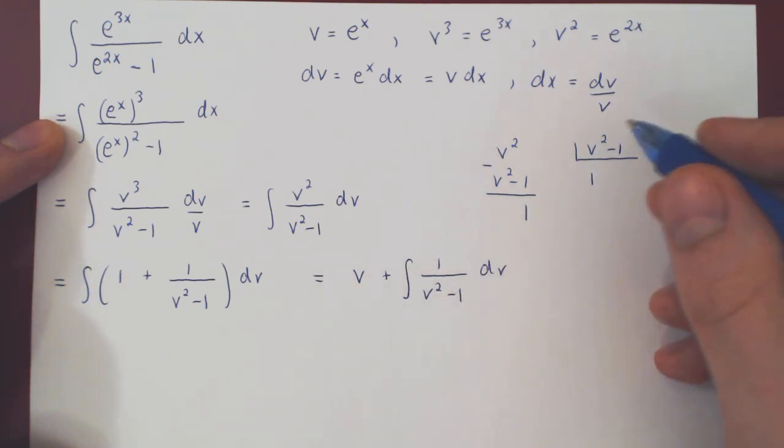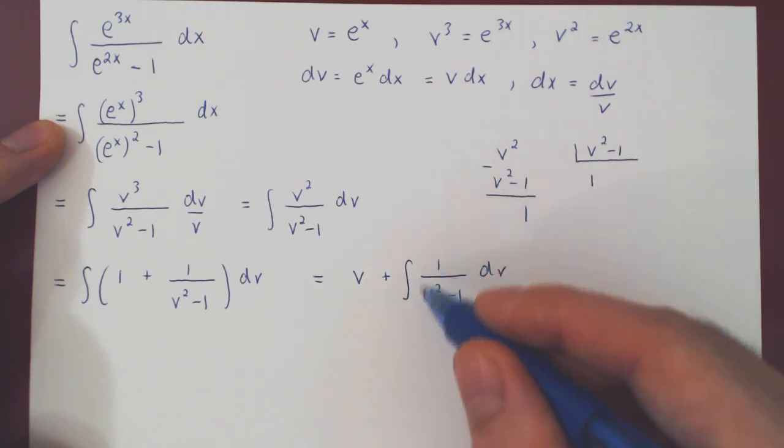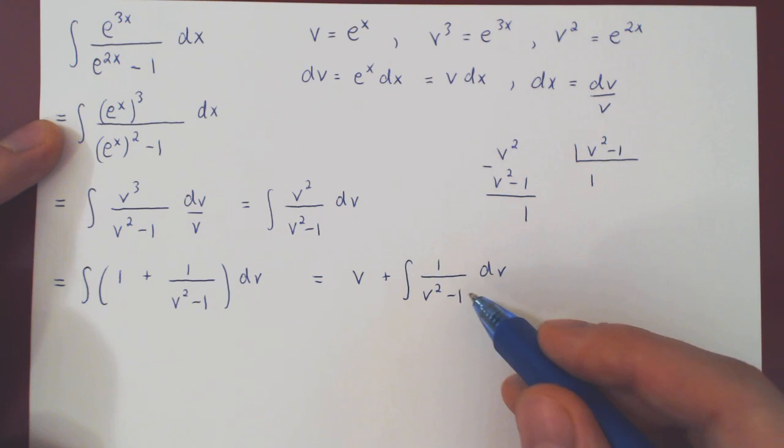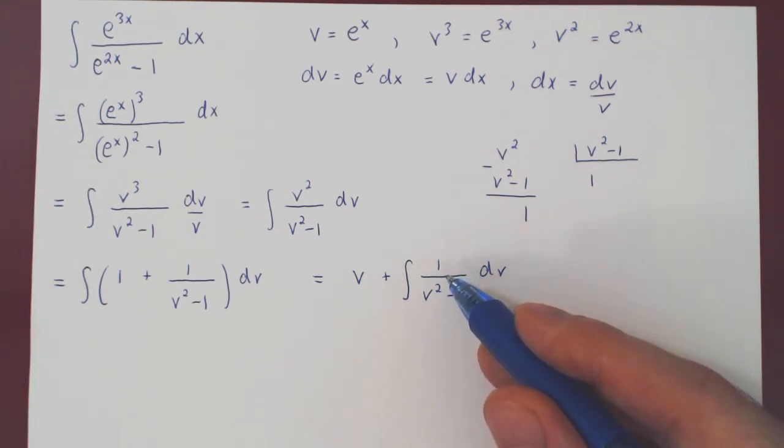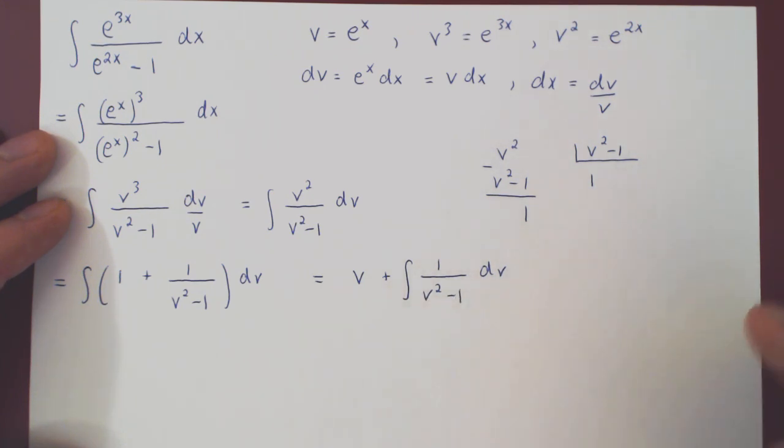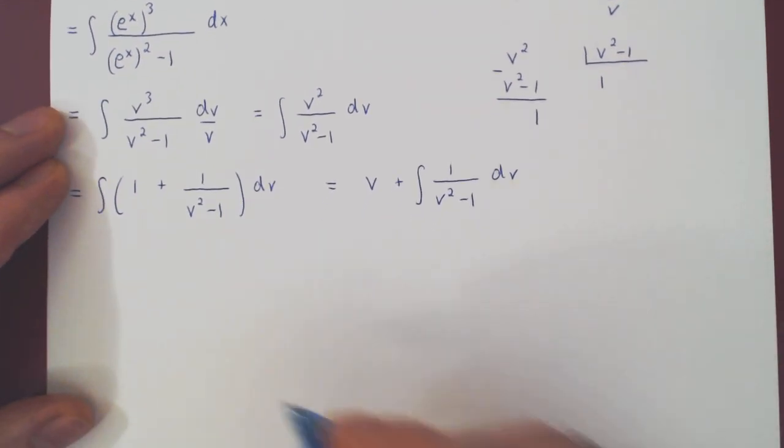Well, after long division of course, the next step is to try and decompose the rational function coming from the remainder of the long division into a sum of partial fractions. And the first step, of course, is to factor the denominator completely. This is a very easy factorization. v squared minus 1 is v times v minus 1 times v plus 1. So let's do so.